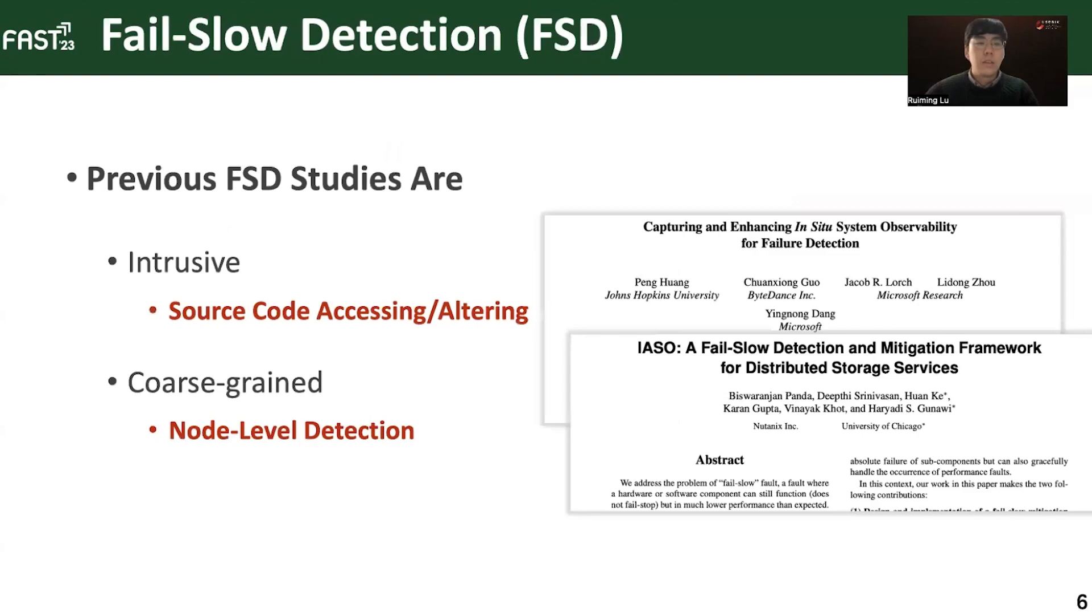Previous studies on fail-slow detection are intrusive and coarse-grained. Intrusive means they need to alter the source code of the run instances. However, large service providers like cloud vendors are prohibited to touch users' code. Coarse-grained means they can only achieve node-level detection rather than device level. Therefore, they still require non-trivial manual efforts to locate the exact fail-slow component, let alone root cause reasoning.